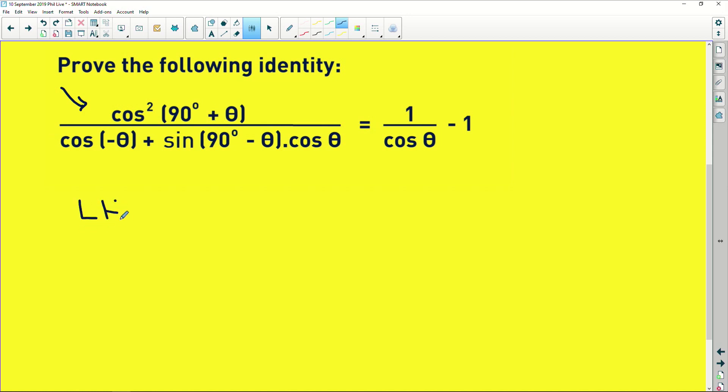You say that the left-hand side is equal to, this numerator is basically the same as saying cos(90° + θ) multiplied by itself. Easy, simple enough, but we will get there.